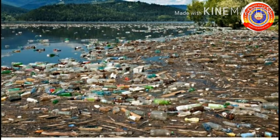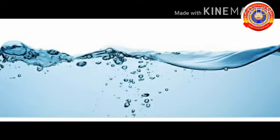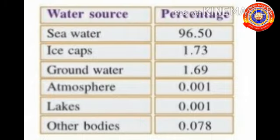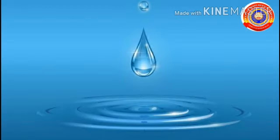Instead of chemical pesticides and fertilizers, we can use bio-pesticides and bio-fertilizers. The waste reaches not only the soil but also the water. The amount of pure water available to us is only a small percent of the total water on earth. Let's observe the water sources and their percentages: sea water 96.50%, ice caps 1.73%, groundwater 1.69%, atmosphere 0.001%, lakes 0.001%, and other bodies 0.078%.